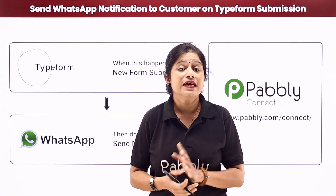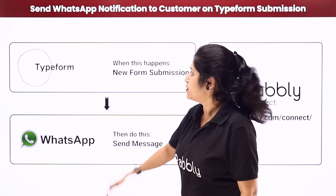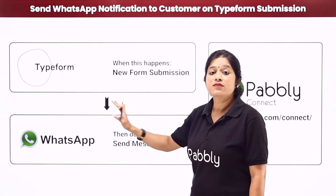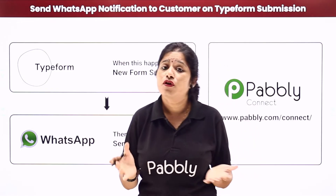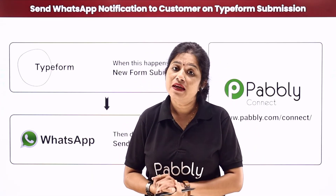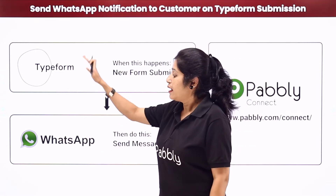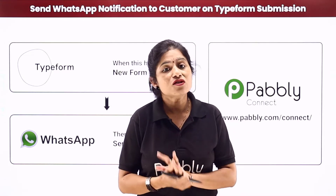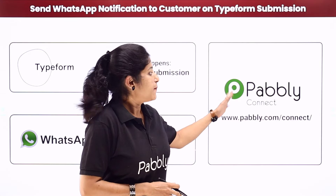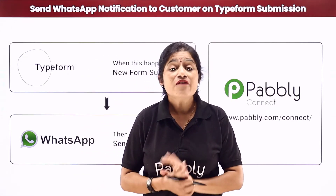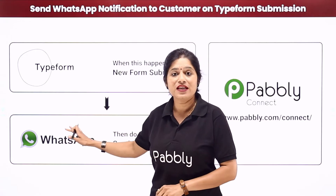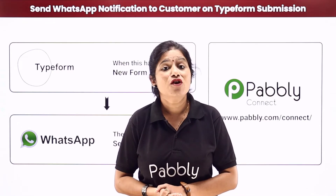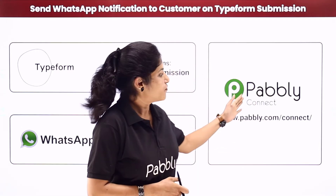The second option is to create an automation, so that whenever a customer fills the feedback form on your Typeform account, automatically a message will be sent to them on their WhatsApp number saying 'thank you for filling up the form' or something like that. The problem is there is no direct connection between Typeform and WhatsApp, so we are using Pabbly Connect — an automation and integration software — to create the integration. The best part is it doesn't require any coding skills or programming knowledge; even a non-technical person can use it very easily.